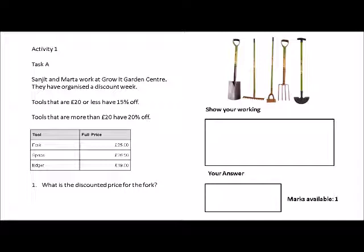Activity 1, task A. Sanjit and Marta work at Grow It Garden Centre. They have organised a discount week. Tools that are £20 or less have a 15% off discount. Tools that are more than £20 have 20% off. And then you've got a list of tools: Fork £25, Spade £26.50, and Edger £19. What is the discount price for the fork?